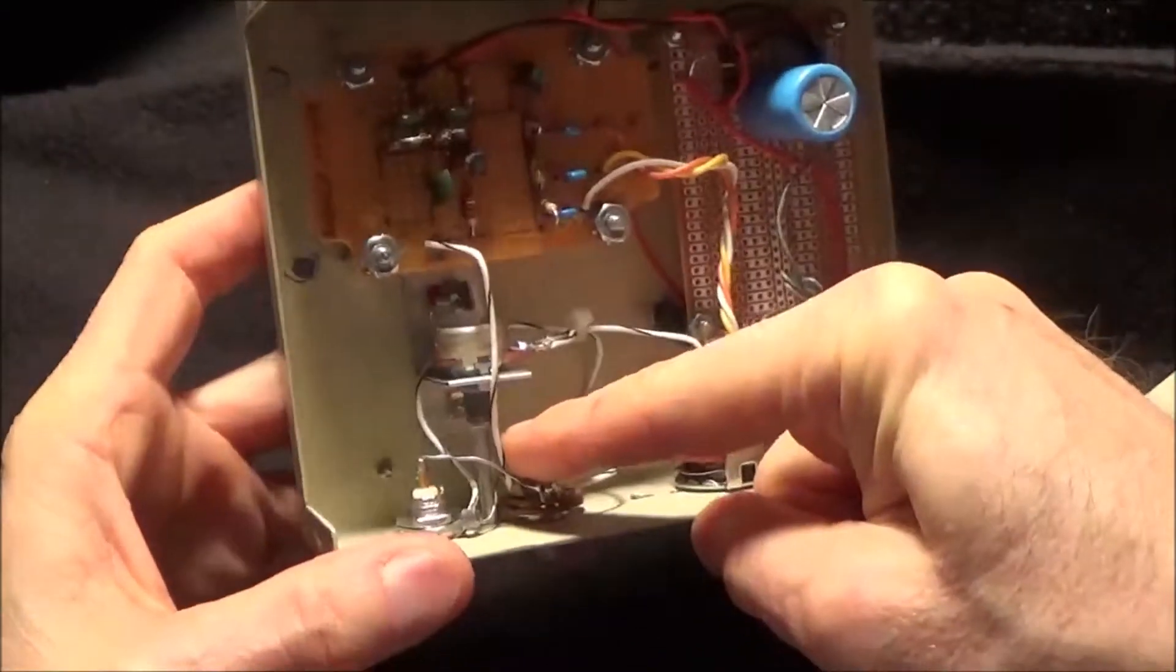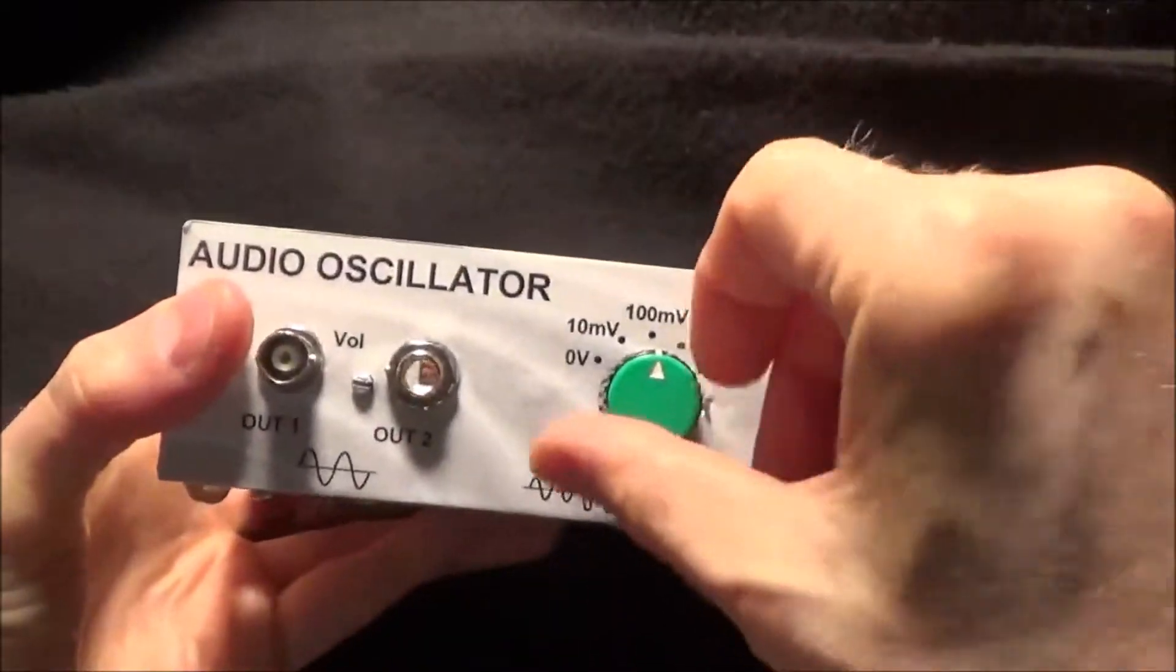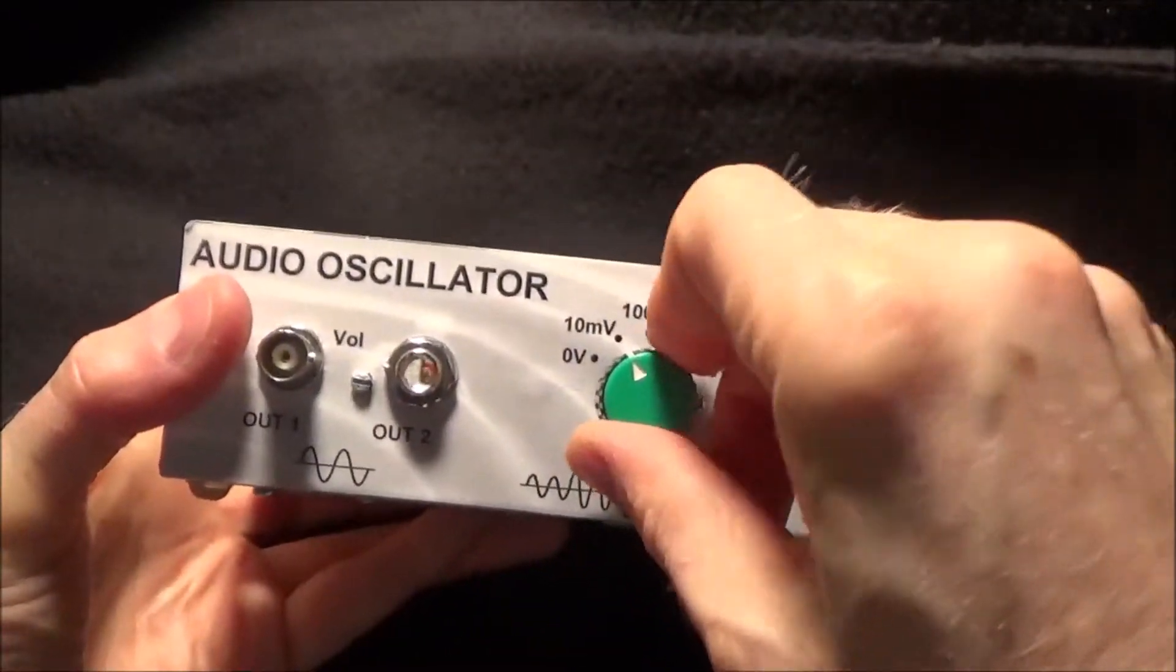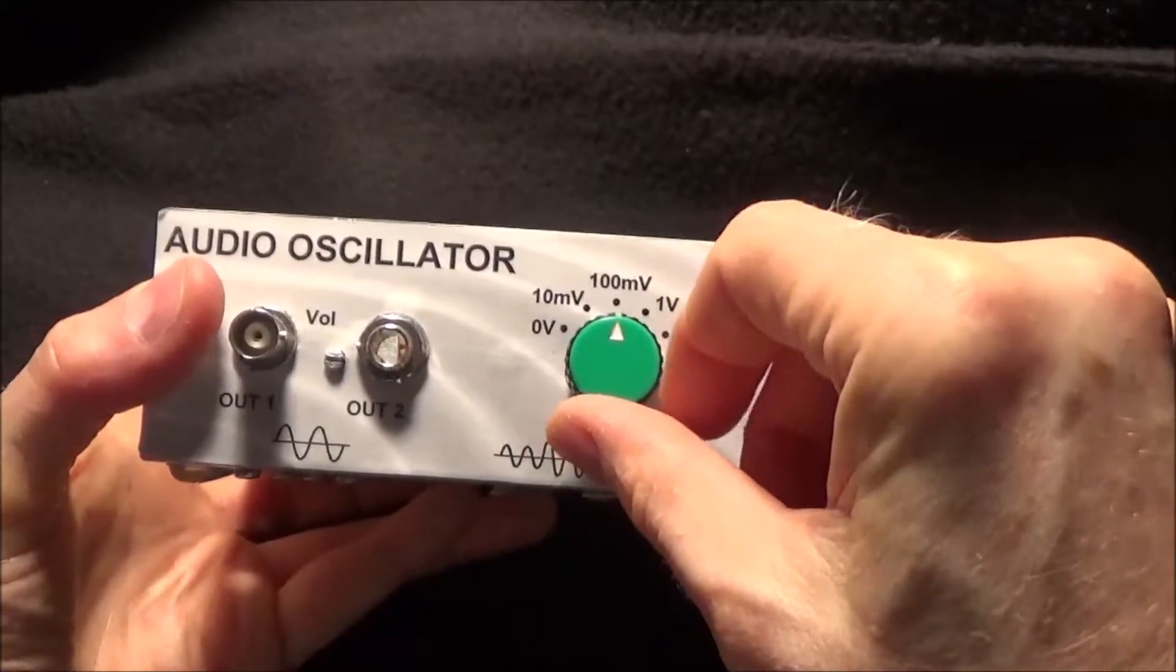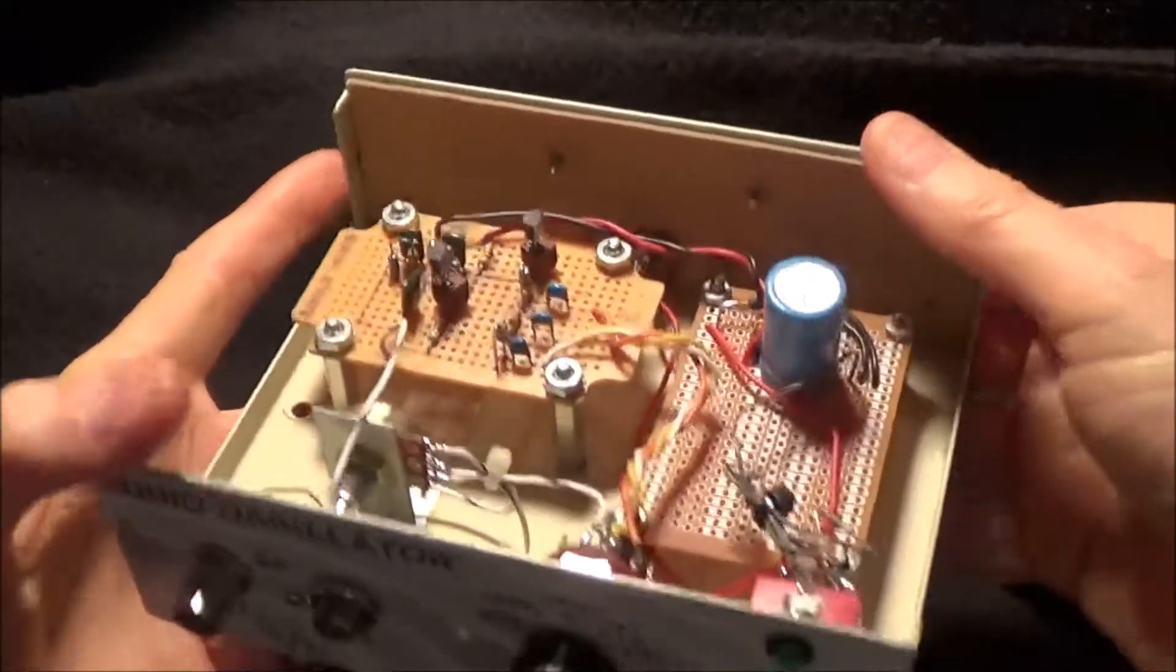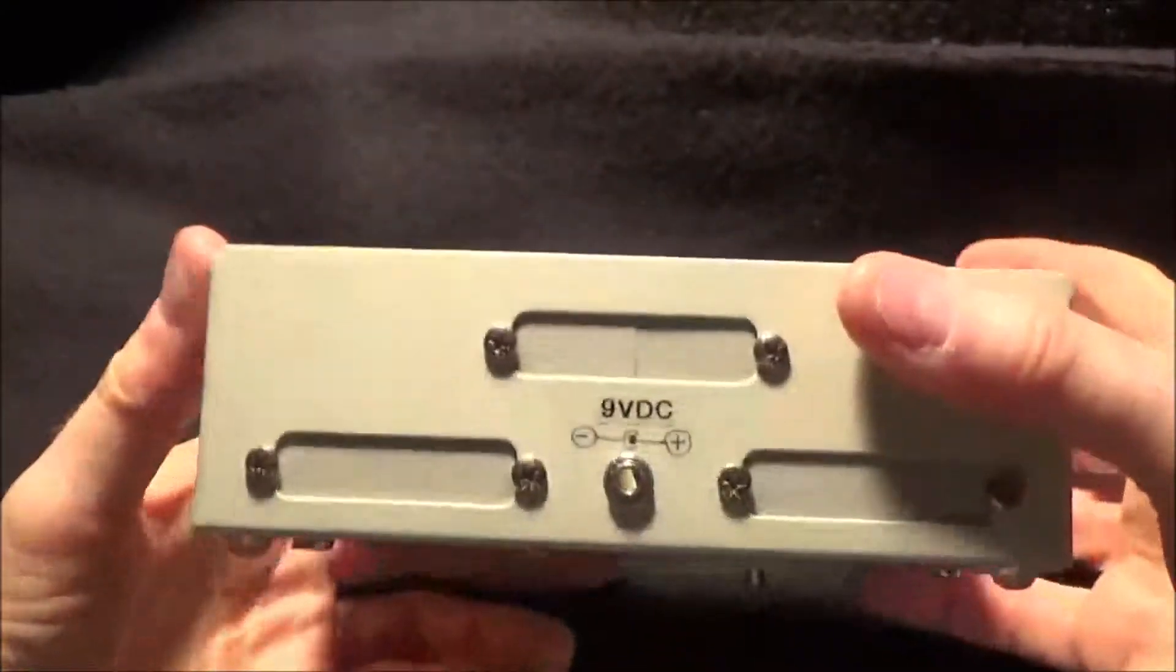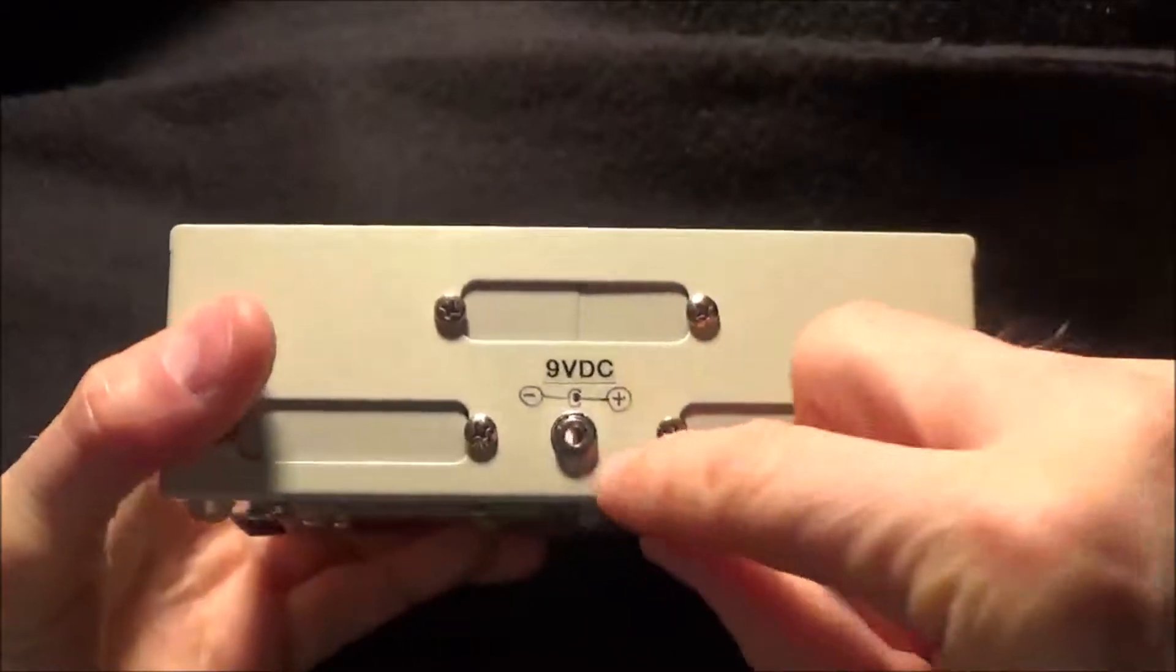This little volume pot is what I use to get the output voltage exactly at these readings. I'm really close to 10 millivolts, hundred millivolts, and one volt with this.